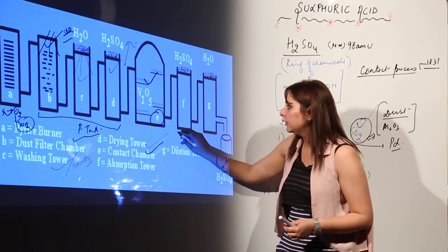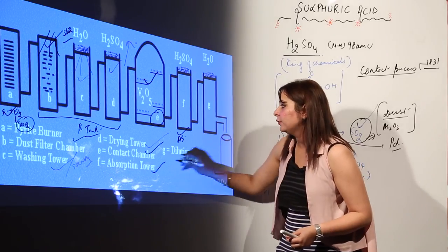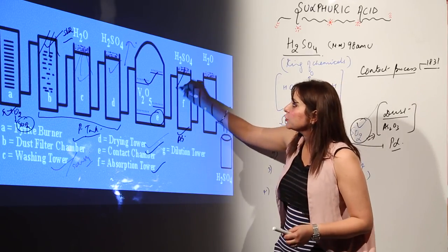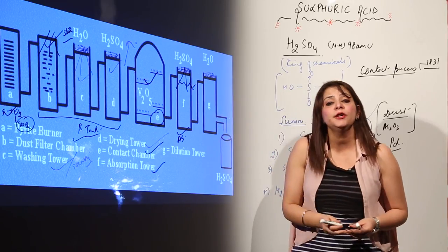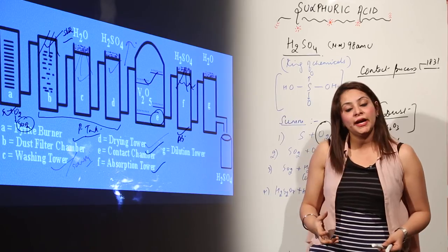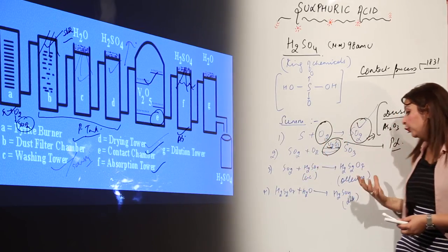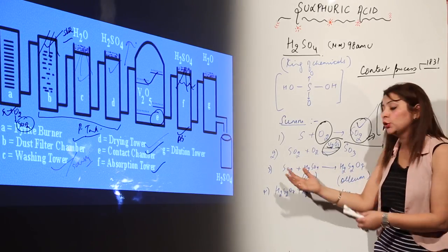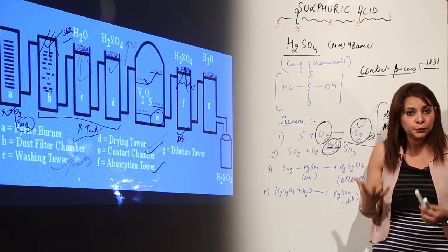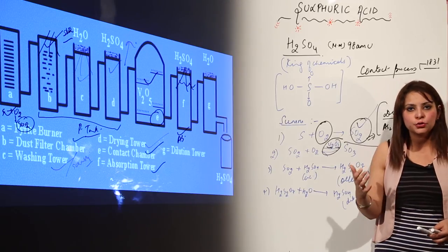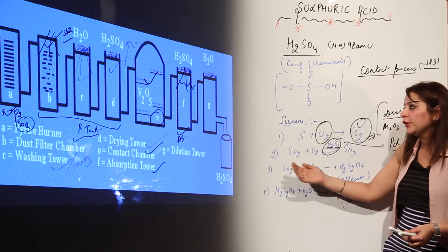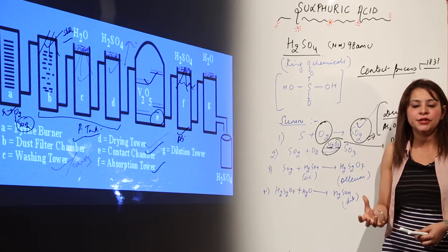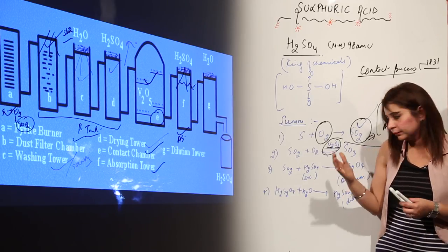The sulfur trioxide from the contact tower is passed into the next chamber, tank F, called the absorbing tower. Here, a stream of concentrated sulfuric acid is passed through. The concentrated sulfuric acid reacts with SO3 to form highly concentrated sulfuric acid — oleum. SO3 is not added directly to water because the reaction is highly exothermic and causes an explosion.